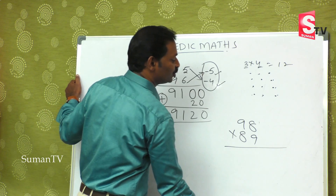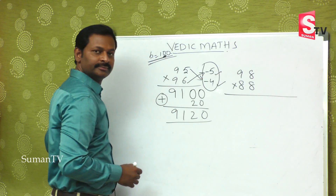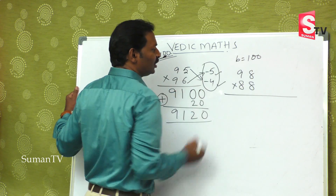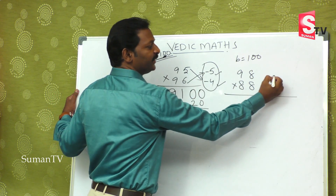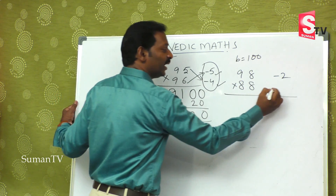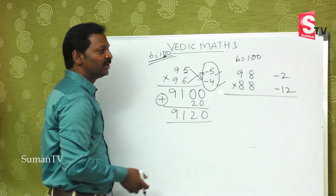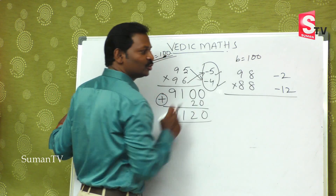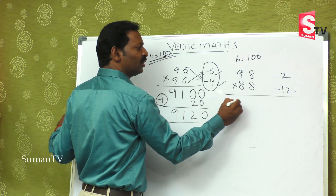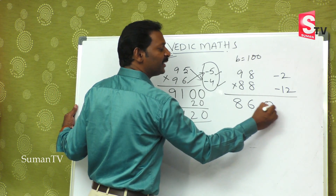Coming to the next one: 98 is multiplied by 88. The base value is 100. 100 minus 98 is minus 2. And 88 plus 12 equals 100, so 100 minus 88 is minus 12. So 88 minus 2 is 86. And 98 minus 12 is also 86. First part of the answer is 86.